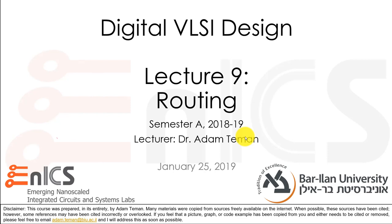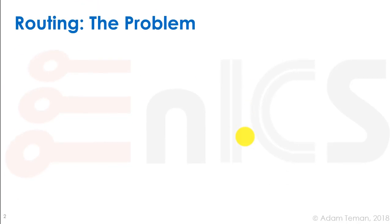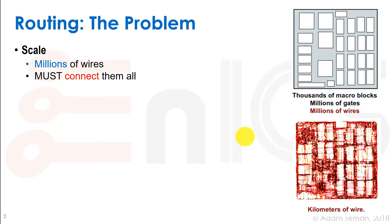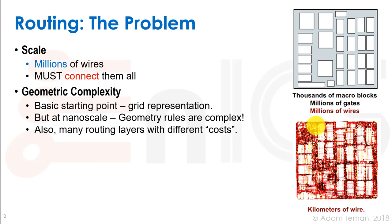Hi everybody and welcome back to Digital VLSI Design. Today we'll do lecture 9: routing. So what's the problem with routing? The scale is huge. We have thousands of macro blocks, probably millions of gates inside, millions of wires, and when we start connecting them we get literally kilometers of wires even though this chip may be only a few millimeters by a few millimeters. The geometric complexity of this problem is huge.